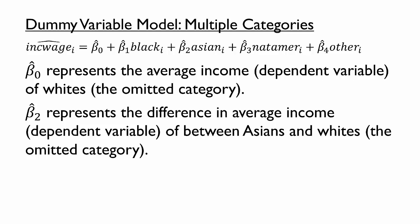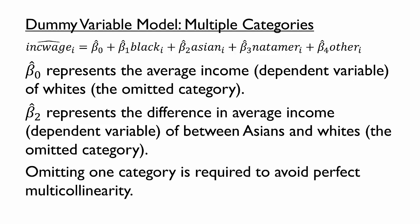Finally, these interpretations might provide some insights into why we had to omit one of the race categories. In essence, the intercept reflects the omitted category, while the dummy variable coefficients reflect the differences between each category and the omitted category. A more technical reason to omit one category is that including a dummy variable for each mutually exclusive category would result in perfect multicollinearity. Summing all of the race variables together would result in a value of 1 for each individual, in essence making it the same as the intercept term.